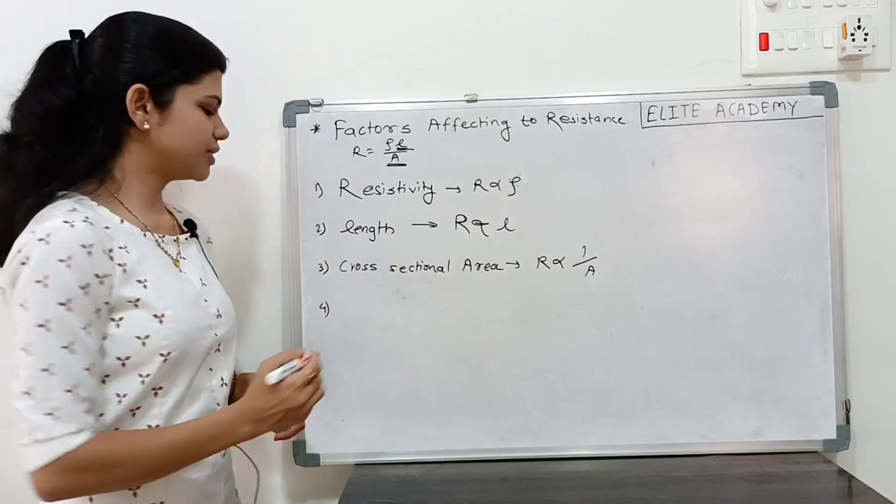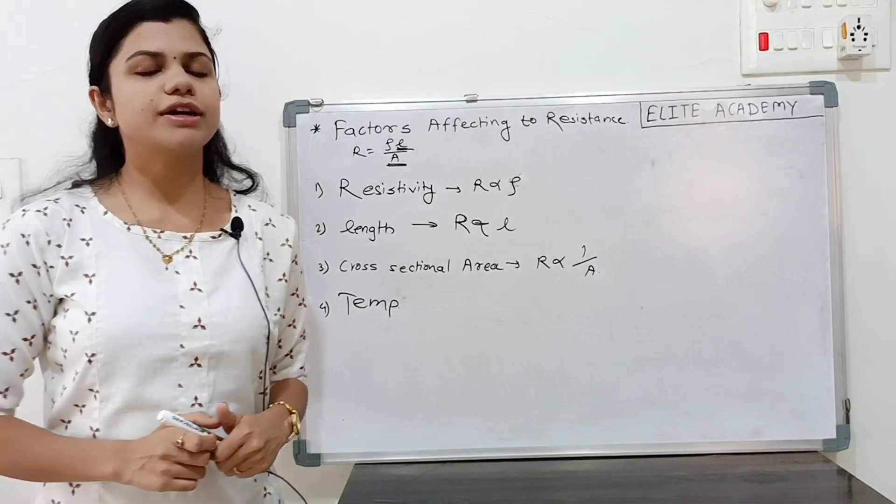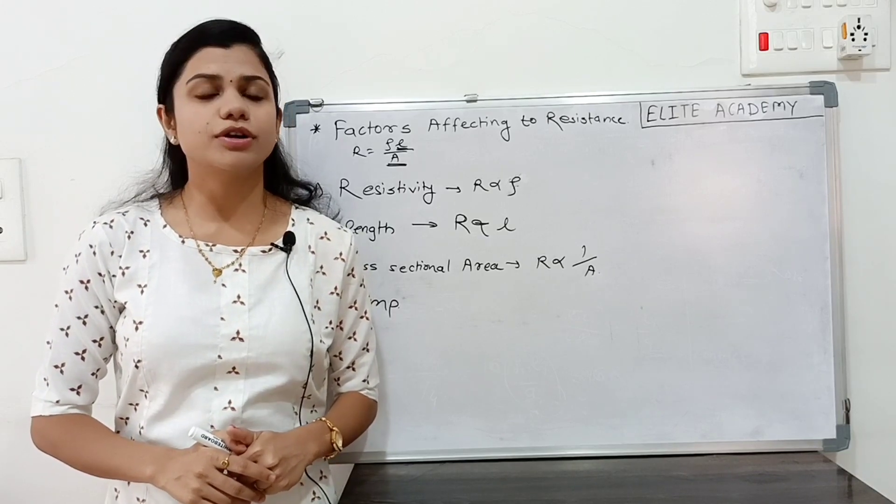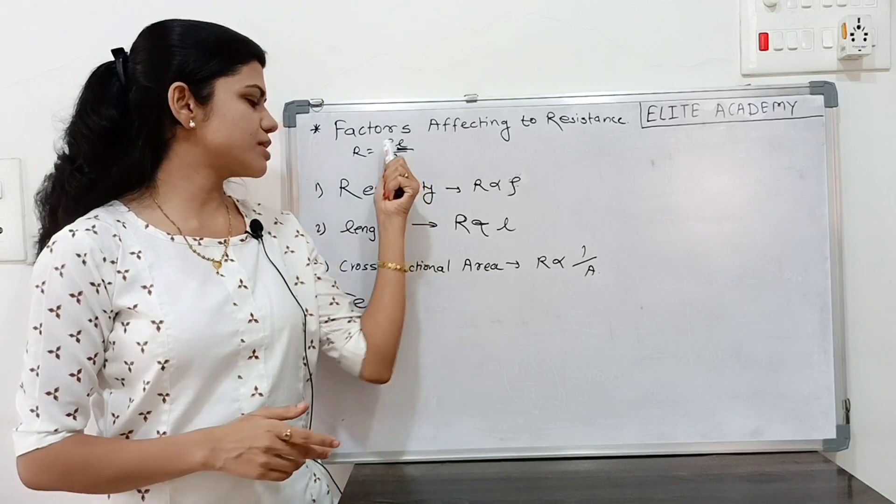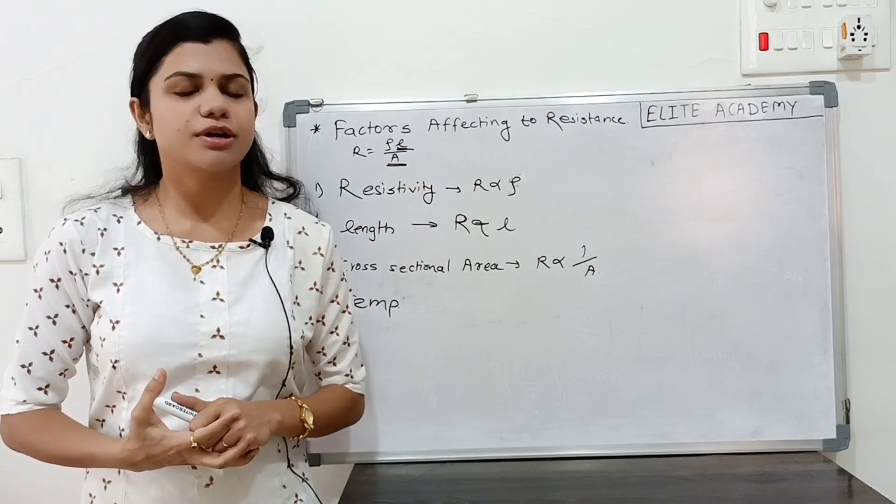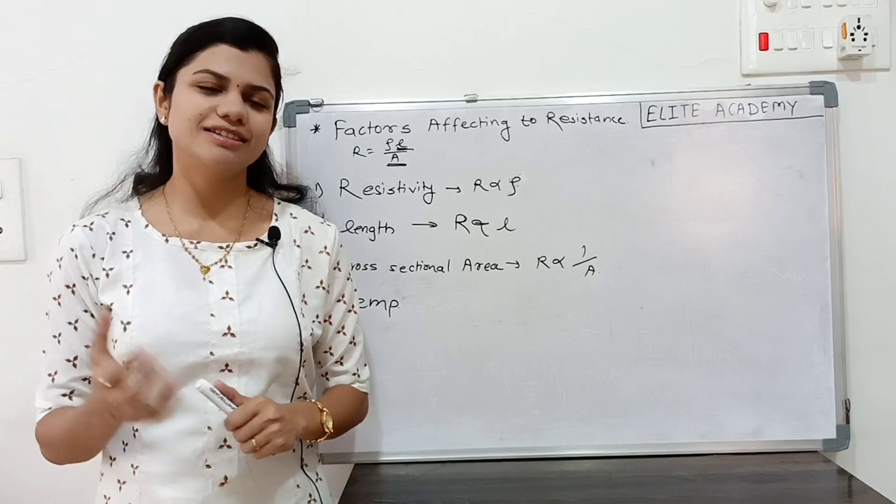And the last one is temperature. There are different types of materials: conductor, semiconductor, insulators, and superconductors. So for these four materials, the resistance and temperature relation is different. This concept comes under the temperature coefficient of resistance. So let's learn that concept.